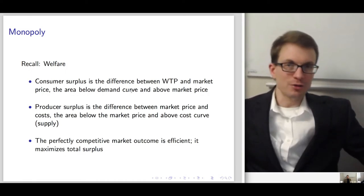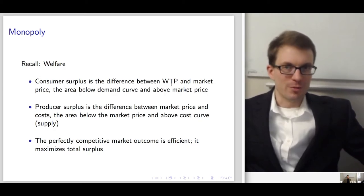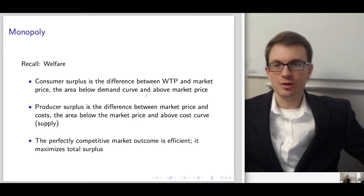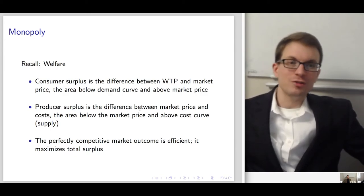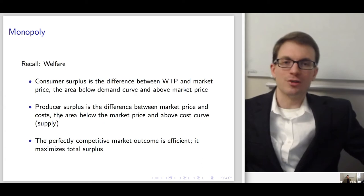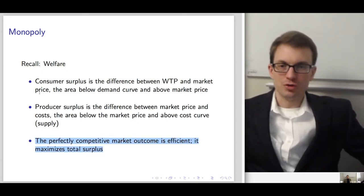Consumer surplus is the difference between the willingness to pay and the market price — the area below the demand curve and above market price. Producer surplus is the difference between the market price and costs — the area below the market price and above supply. A perfectly competitive market is efficient and maximizes total surplus, which is the sum of consumer surplus and producer surplus.